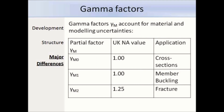Something you'll definitely come across when using Eurocode 3 are the gamma factors. These partial factors are applied to the characteristic values of resistance to obtain design resistances. The UK National Annex specifies the values of these gamma factors: gamma m0, related to the resistance of cross-sections, is 1.0; gamma m1, related to the resistance of a member to buckling, is also 1.0; and gamma m2, related to the resistance of a cross-section to fracture, is 1.25. The reason it's higher is because it reflects the undesirable nature of this failure mode. You will constantly have to use these gamma factors when designing steel structures to Eurocode 3.